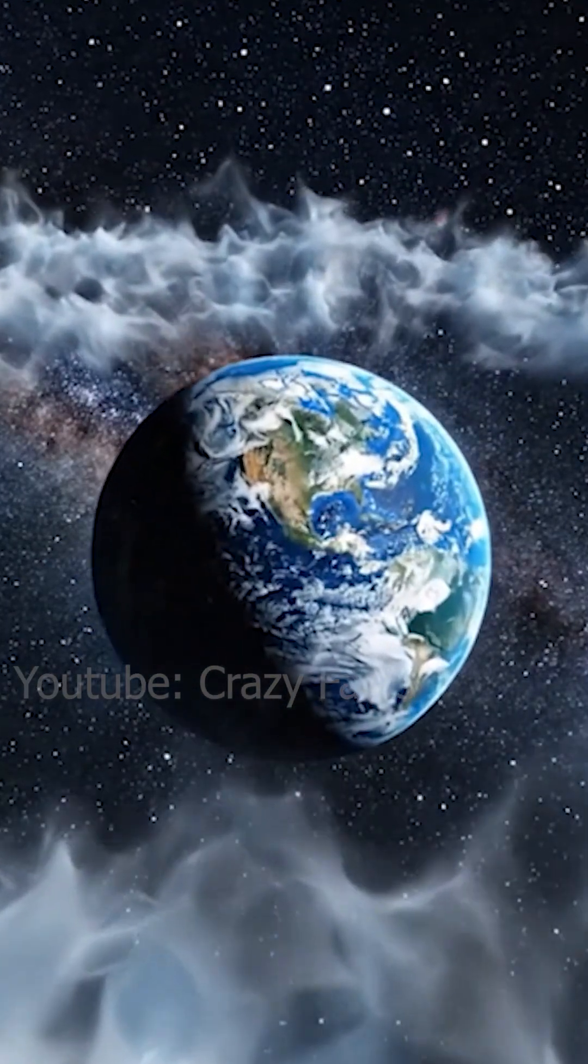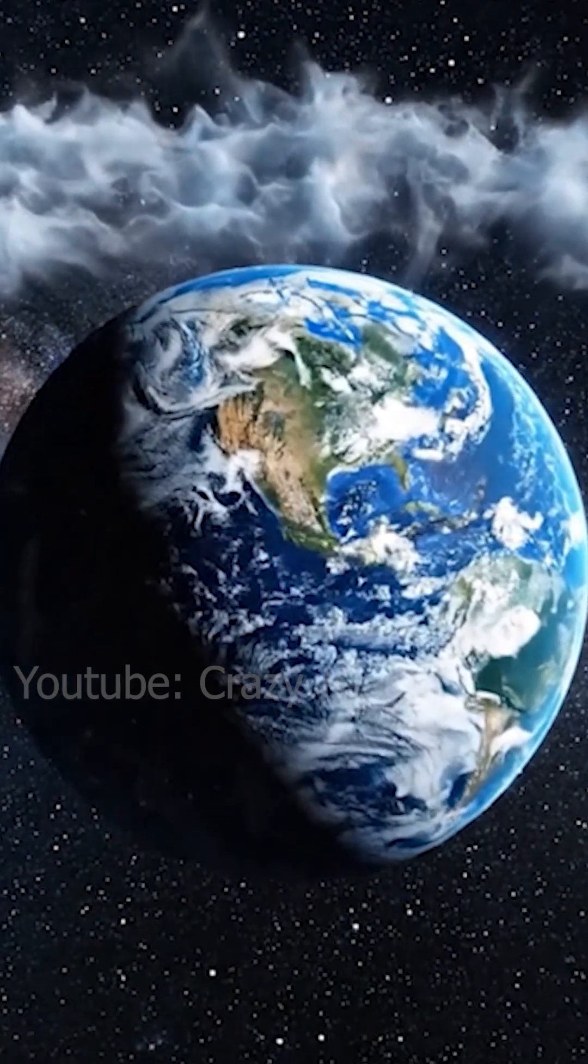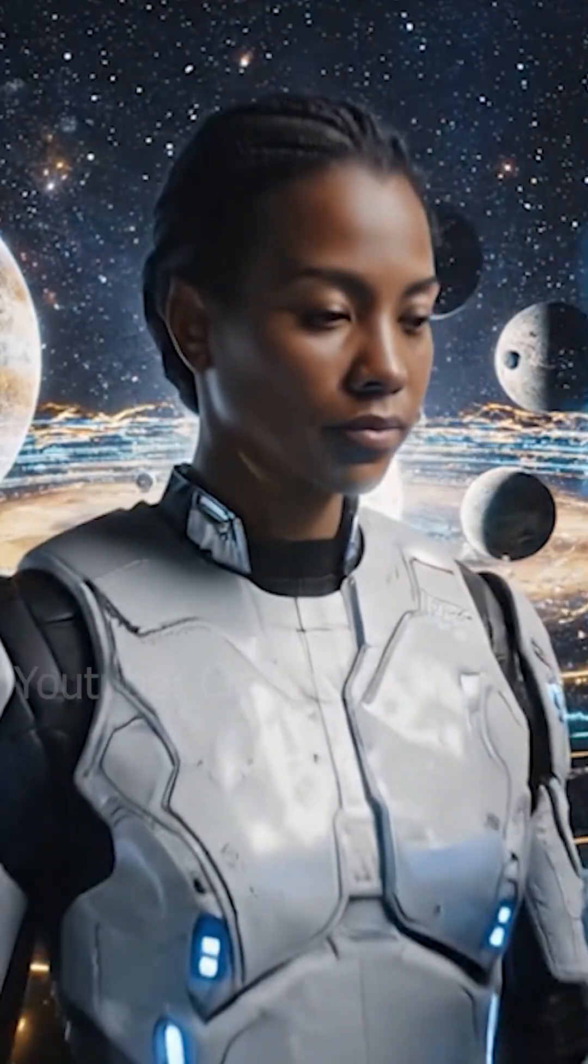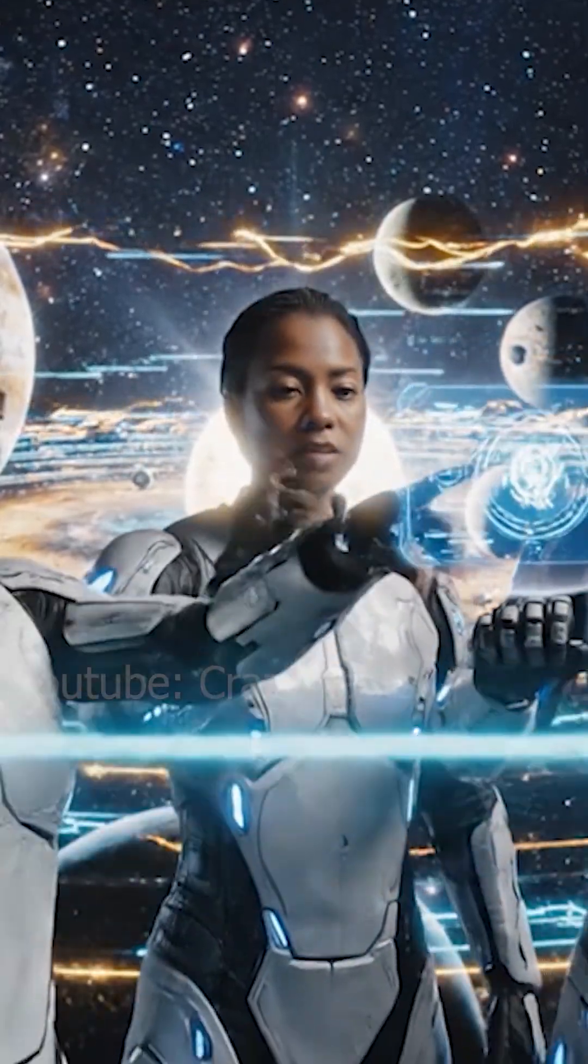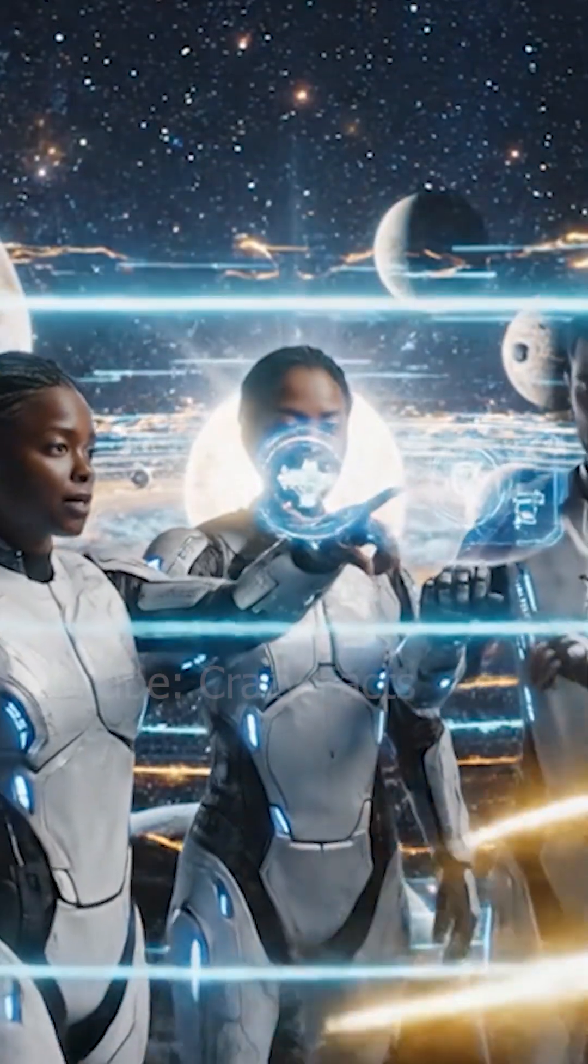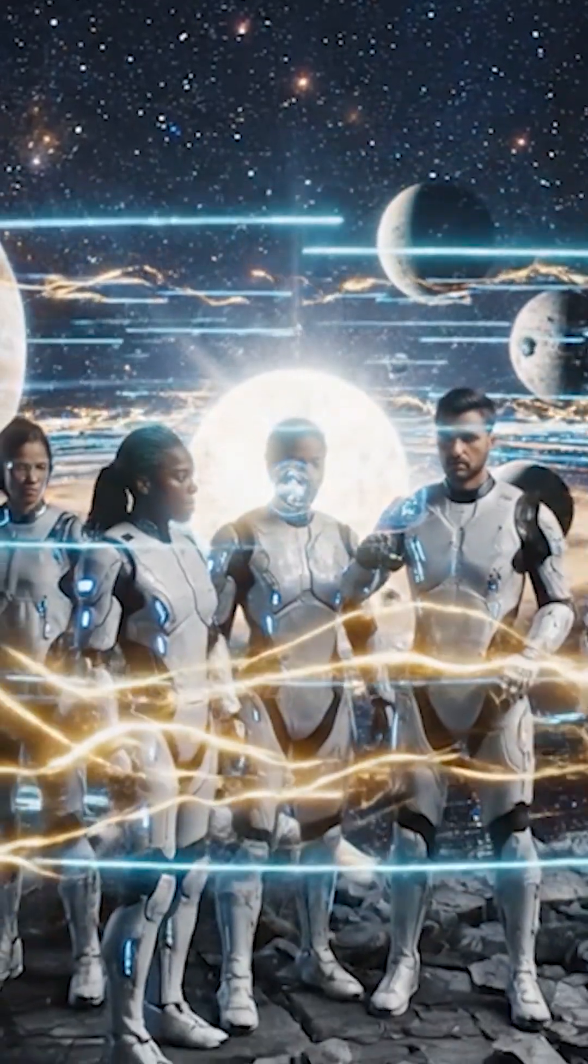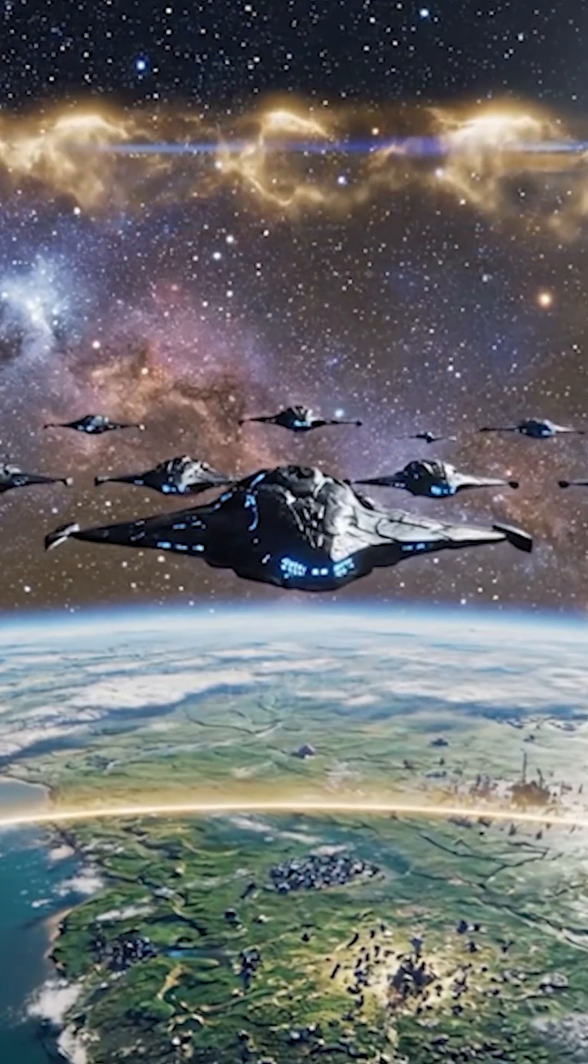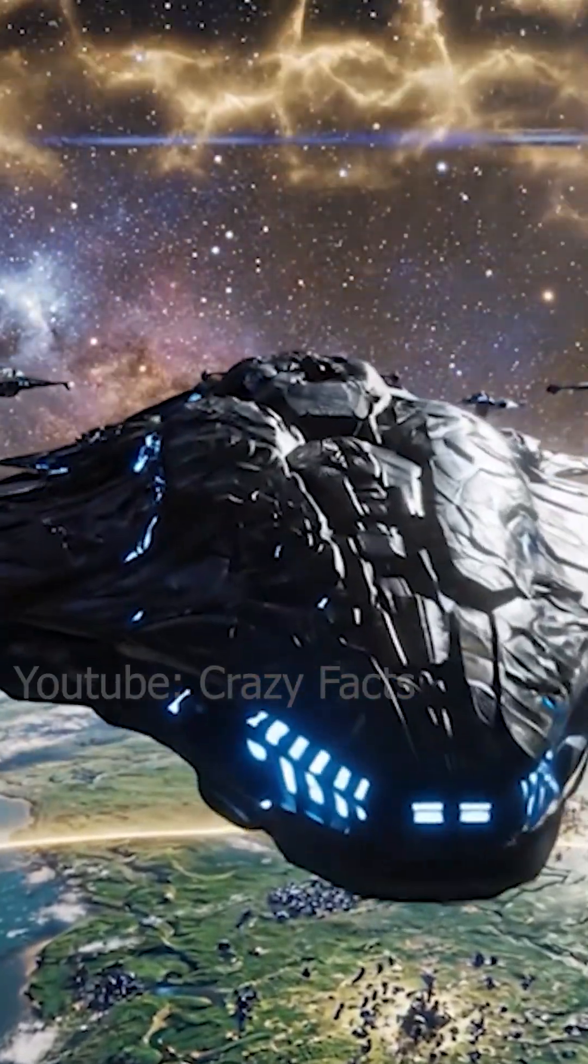Some versions of the zoo hypothesis speculate that this boundary might not be entirely natural. It could serve as a form of cosmic fence, designed either to protect us from external forces, or to prevent us from venturing too far before we are ready. It may even function as a monitoring perimeter for those observing us, much like a hidden screen surrounding a nature reserve.